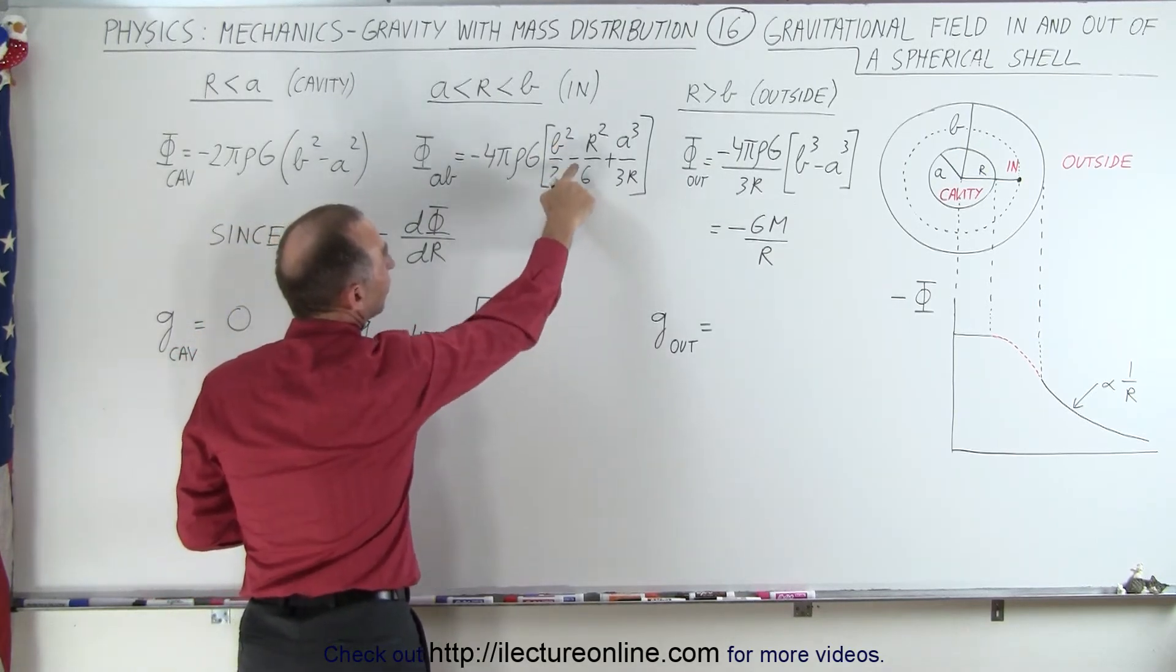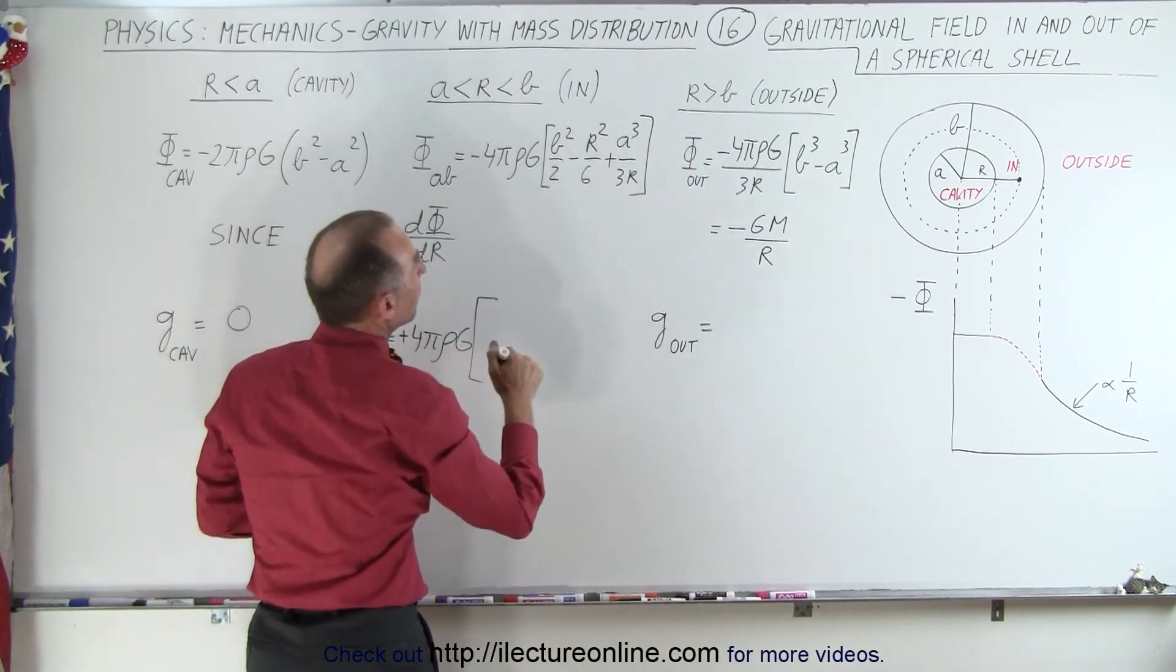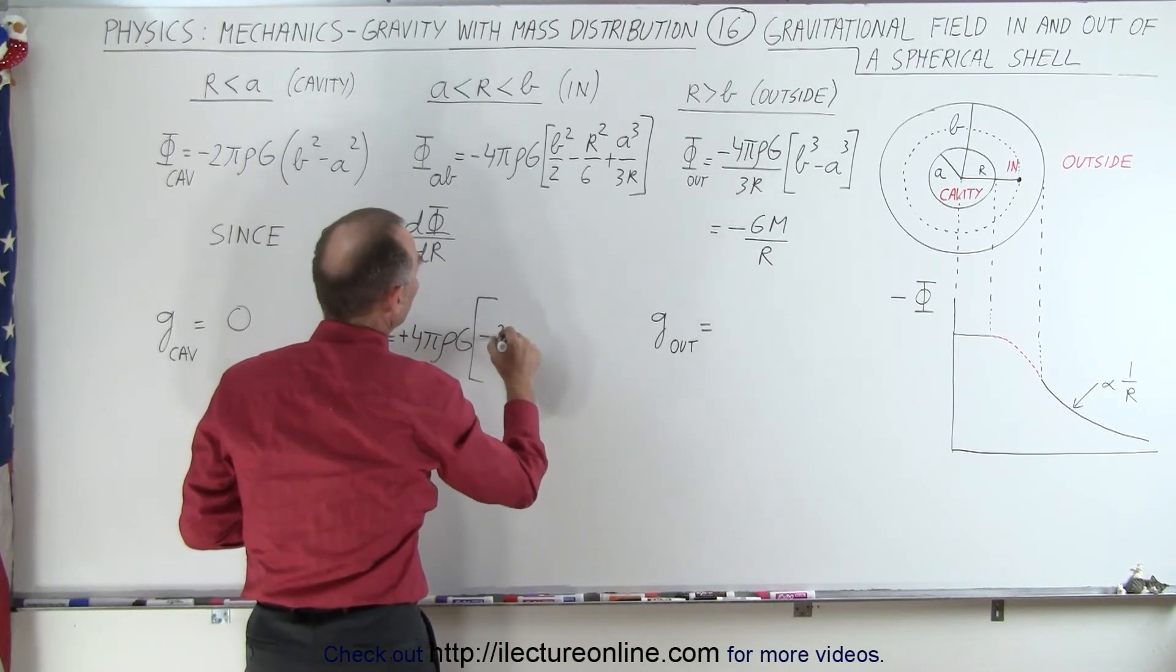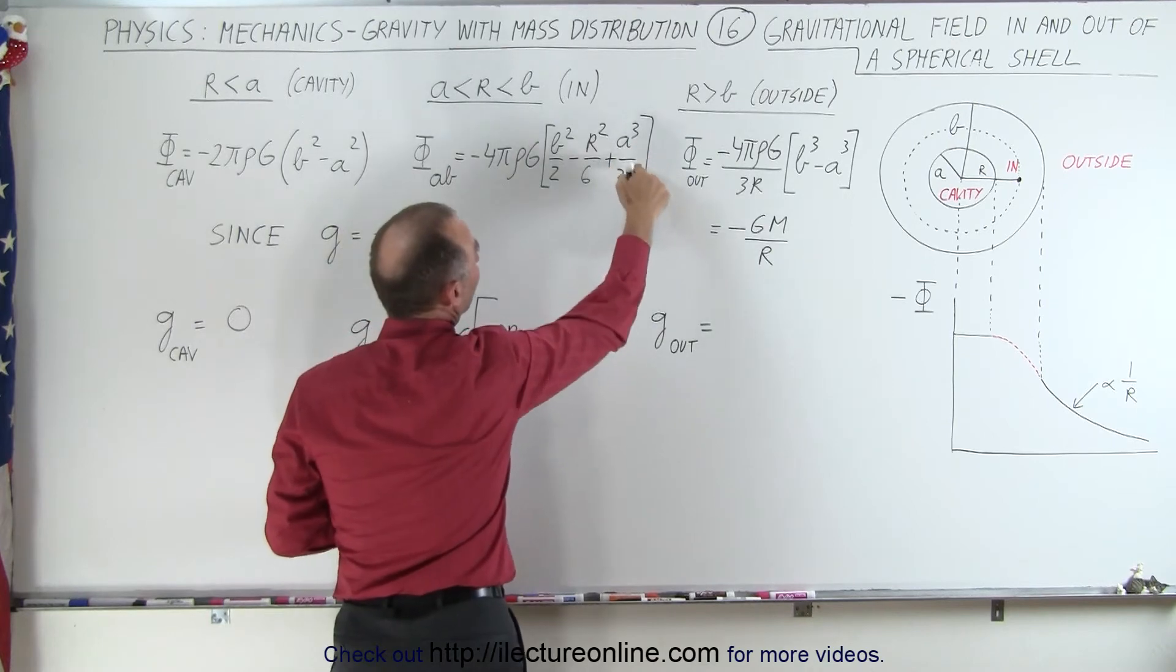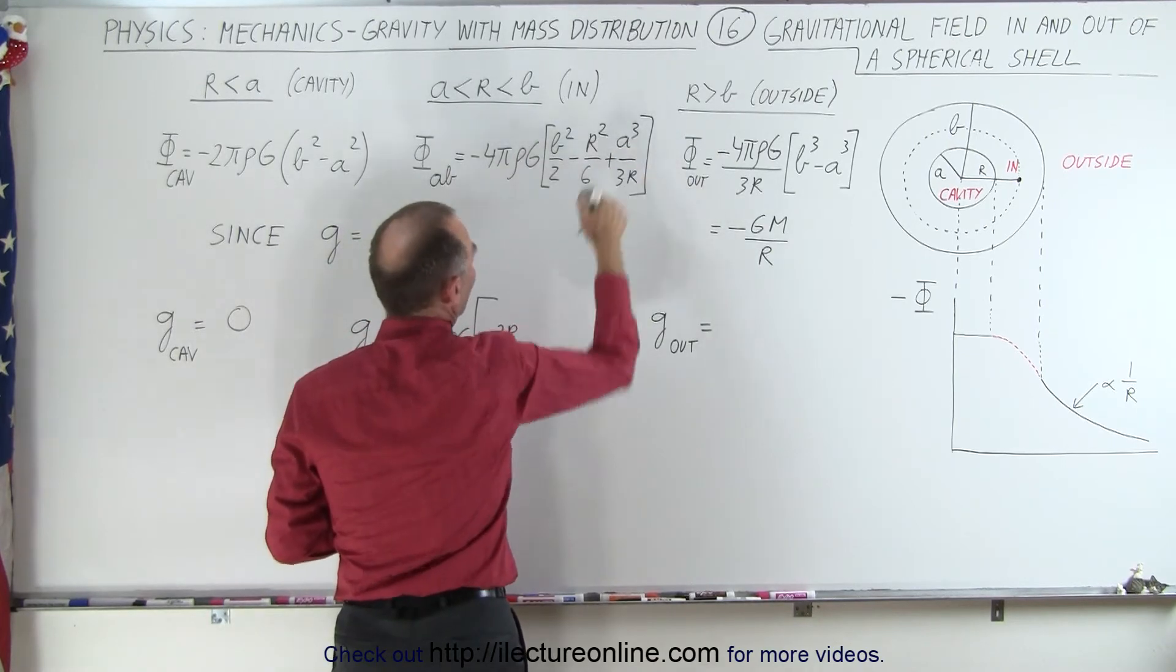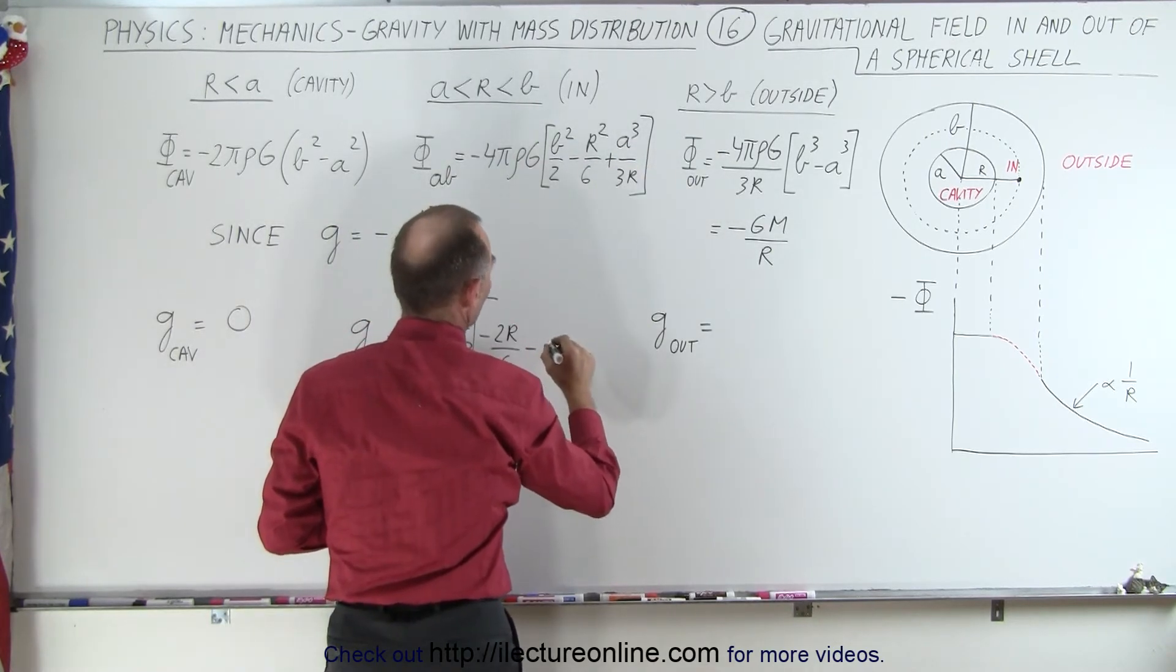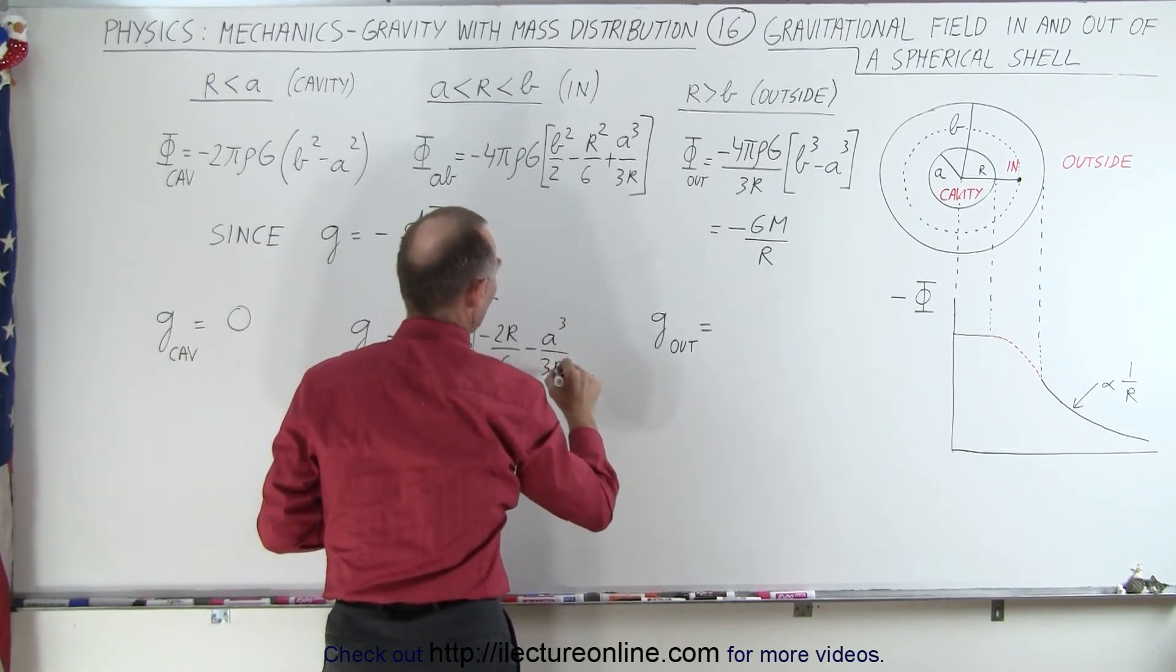So that will be zero. The derivative of this would be minus 2r over 6, and the derivative of this, this is r to the negative 1 power, so this becomes minus a cubed divided by 3r squared.